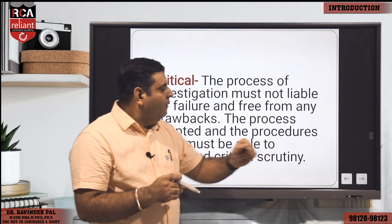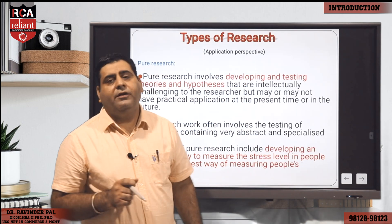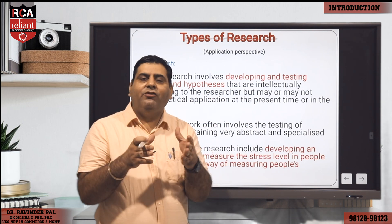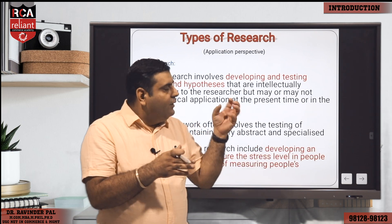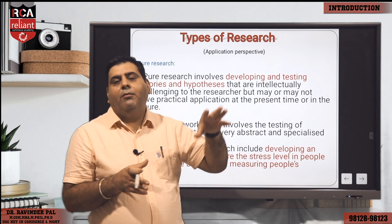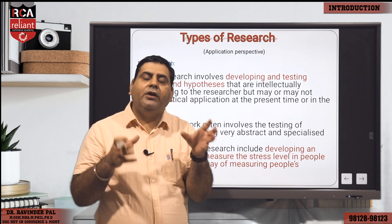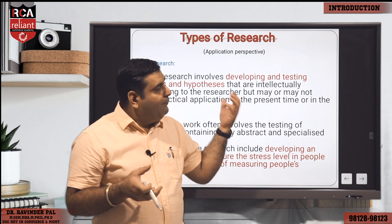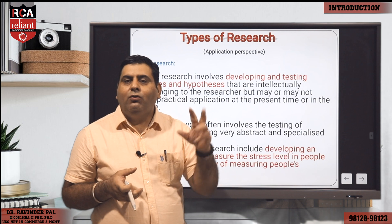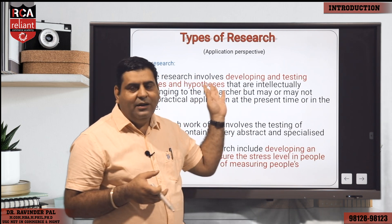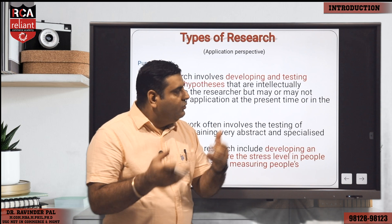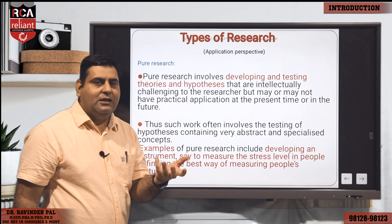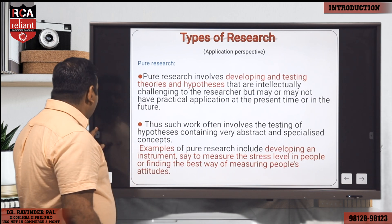Now we will discuss the types of research. If we talk about types of research, we can differentiate them on various grounds. First, from the application perspective — where we are going to use the knowledge. From an application perspective, we can differentiate research into two parts: one is called pure research and the second one is called applied research. The basic meaning of pure means basic — developing and testing theories.